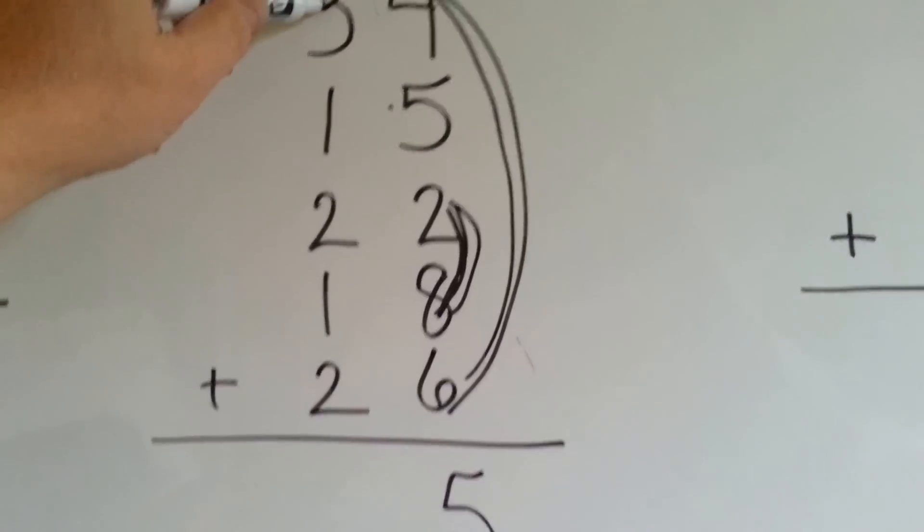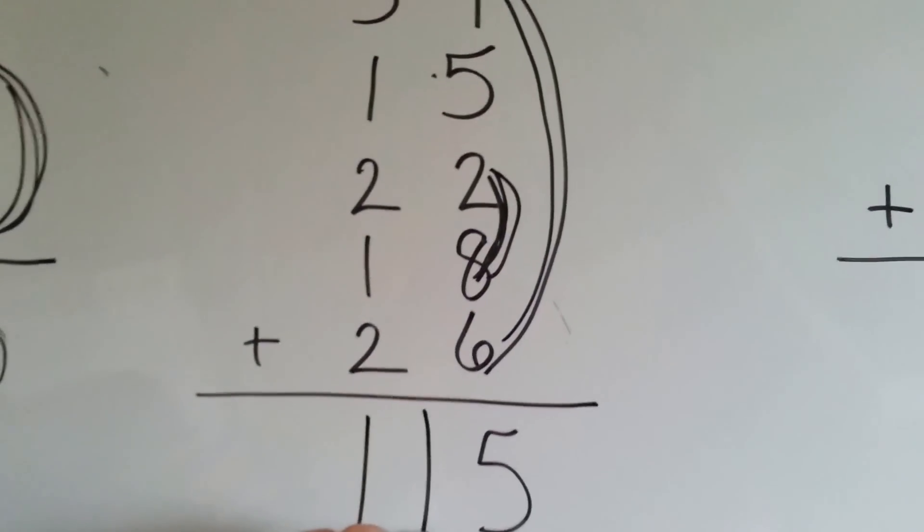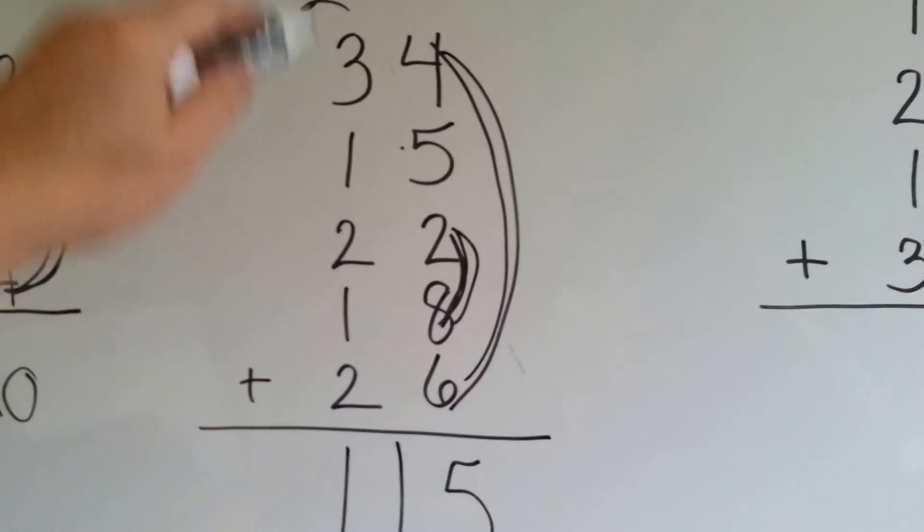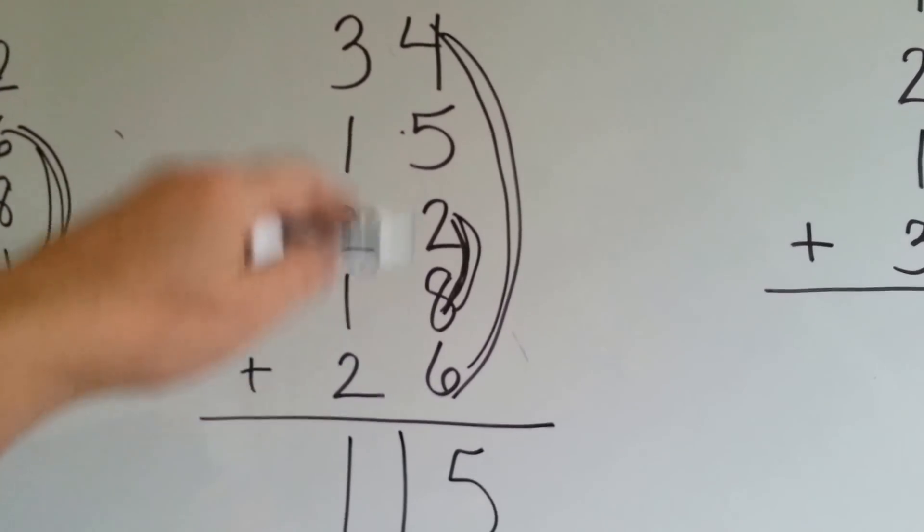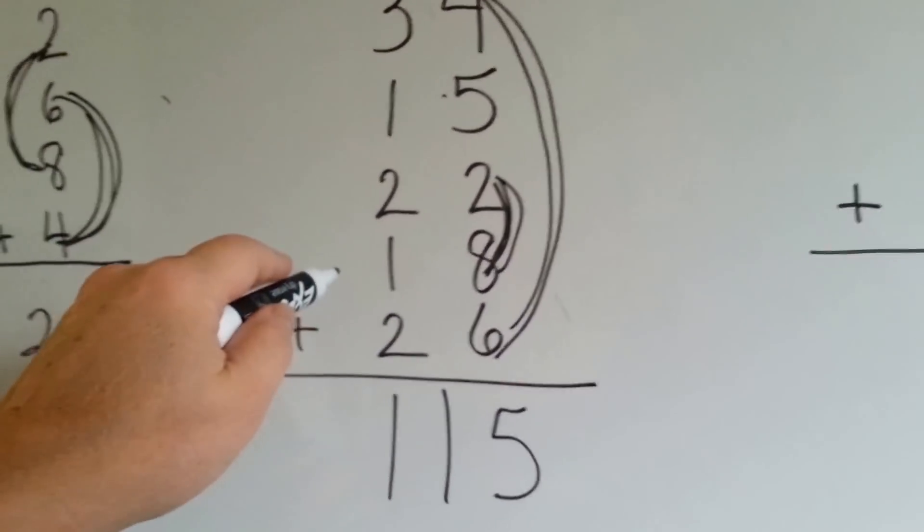2 plus 3 is 5, 6, 7, 8, 9, 10, 11. So, we didn't have to do compatible numbers on this side. We did it on this side because the numbers were a little bigger. 1s, 2s, and 3s are easy to add in your head.